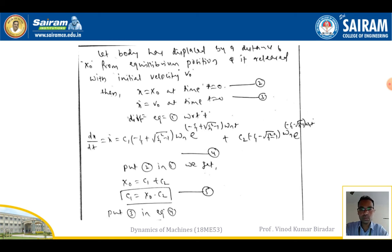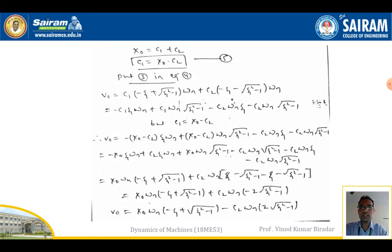Applying x = x₀ at t = 0 gives: x₀ = C1 + C2, therefore C1 = x₀ − C2 (equation 5).